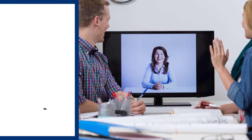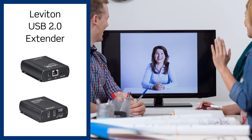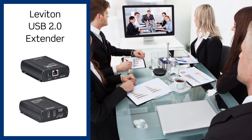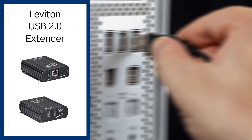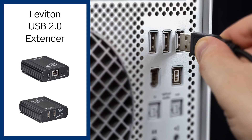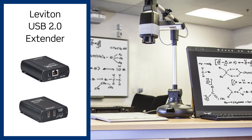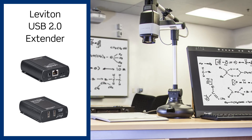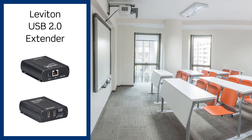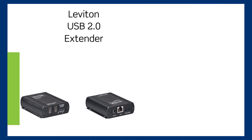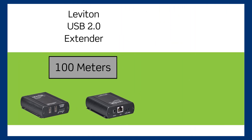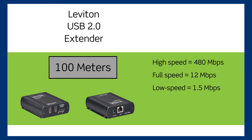For higher speed devices, you'll need USB 2.0. It's for high bandwidth cameras and video, file sharing, video output for smartphones or tablets, printers, and interactive short throw projectors. The Leviton 2-port USB 2.0 extender can increase signal reach up to 100 meters. This transmitter-receiver pair supports high speed, full speed, and low speed devices. It also charges devices.